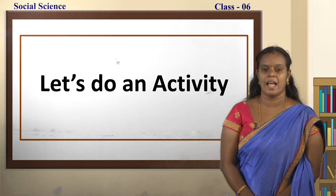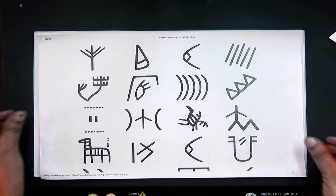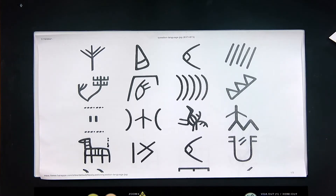Let's do an activity children. Look at this sheet of paper. Can you find any writings on this? No, you are right children. Now look at this second sheet of paper. Can you find any writings? Yes, you can find it. Could you please read it out for me? You are not able to read.